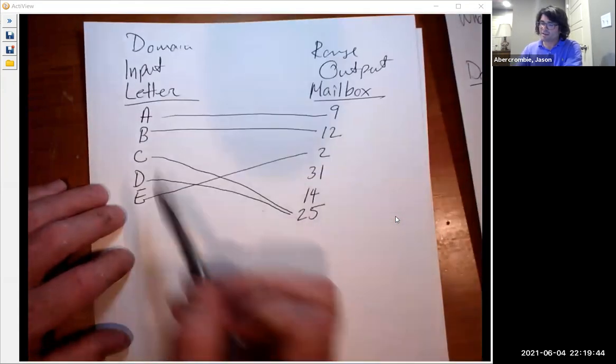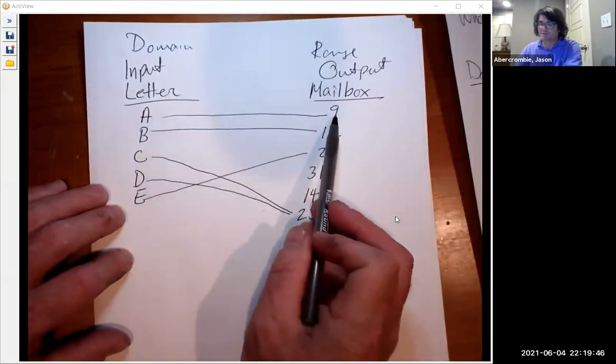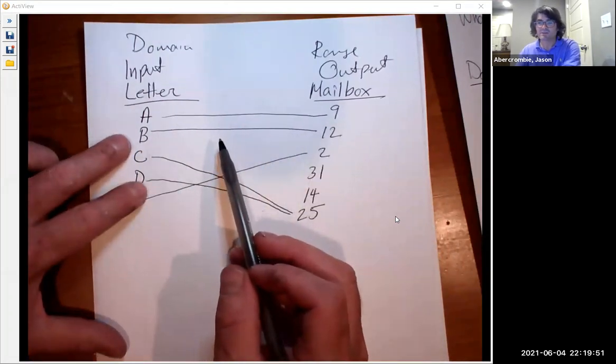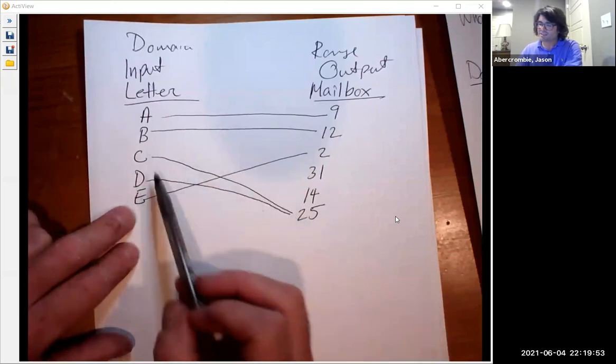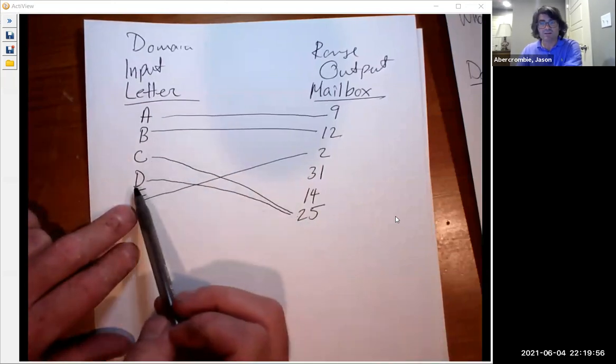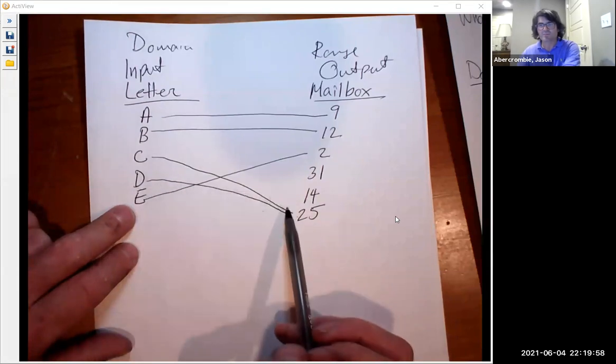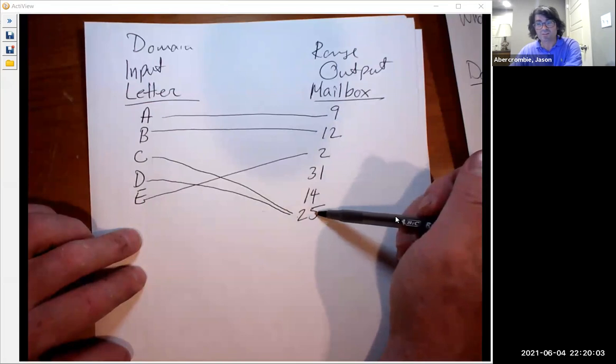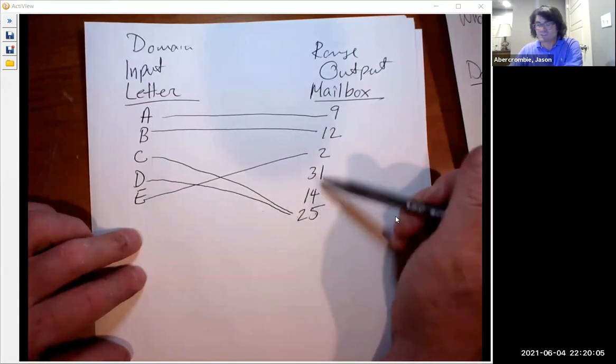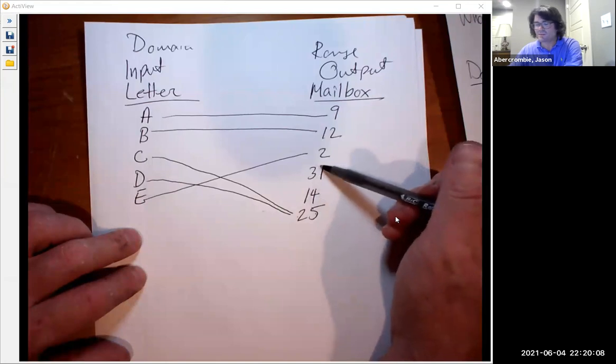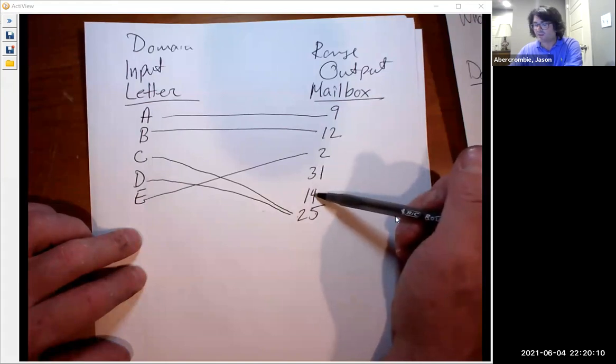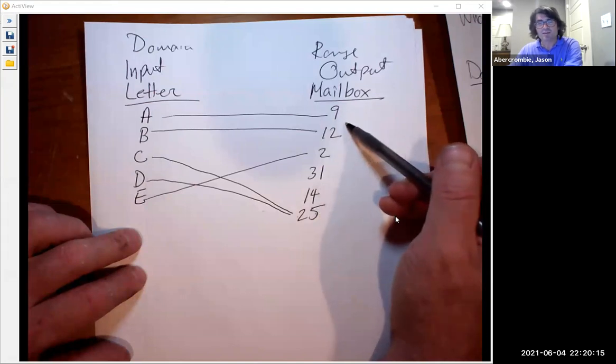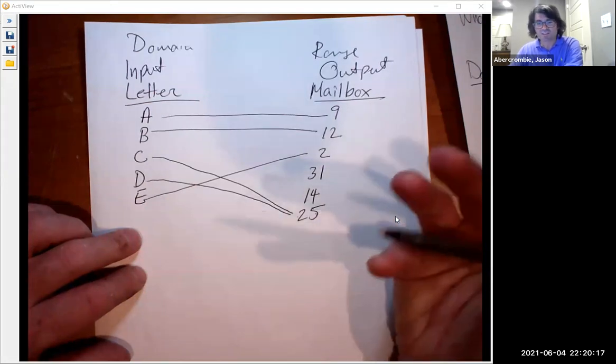So letter A goes to mailbox nine. Letter B goes to mailbox twelve. It's not trying to go to two different mailboxes, you can't do that. C only goes to mailbox twenty-five, D only goes to mailbox twenty-five. Now one thing about mailboxes: mailboxes can have more than one letter, that's fine. A mailbox could have lots of letters. It could also be empty, that's also fine. And so we have two empty mailboxes here. We have one mailbox with two letters, and then these mailboxes have just one letter. And so that is, I think, a good analogy to help you kind of keep straight the two rules that make up something to function.